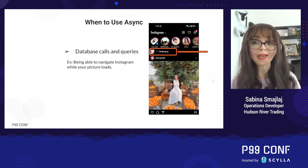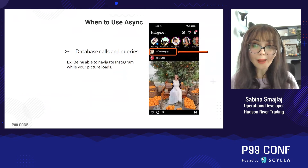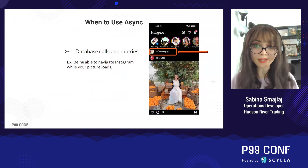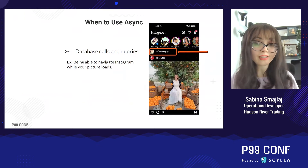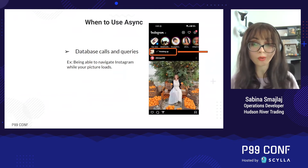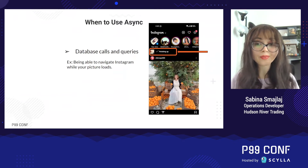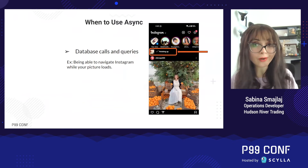Async is also useful when making database calls and queries. Let's say you are adding a post to your Instagram feed. The app has to contact the server, upload your images to their database, and then update the front end with that image. Instead of pausing everything until all of that is done, Instagram instead shows you in that orange rectangle that it is working on adding your posts. But in the meantime, you can navigate around their app as you normally would.